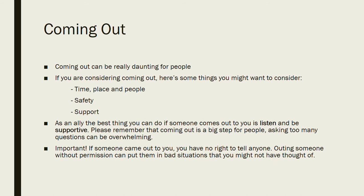As an ally, or if someone has come out to you, the best thing you can do is listen — really listen — and be supportive. Please remember that coming out can be a very big step for people, and asking too many questions can be really overwhelming. It's not a queer person's duty to answer all of your questions. Also very important — this goes for absolutely everyone: if someone has come out to you, you have no right to tell anyone except if they give you permission. Outing someone without permission can put people in really bad situations that you might not have thought of. It takes the power that they have as a queer person away from them, which is a really shitty feeling. So please consider that and don't do it.